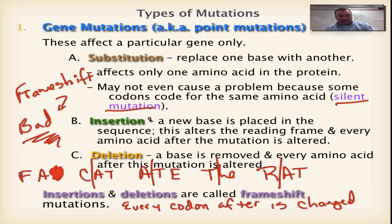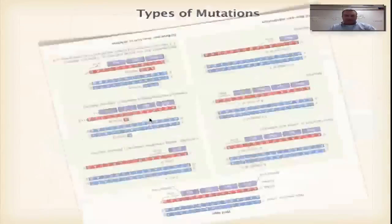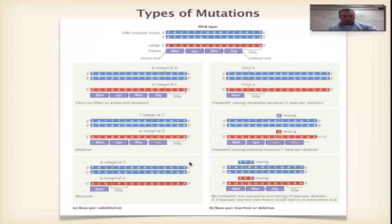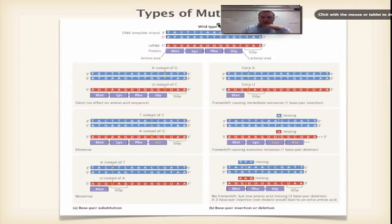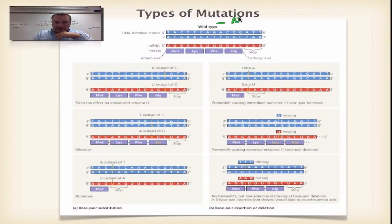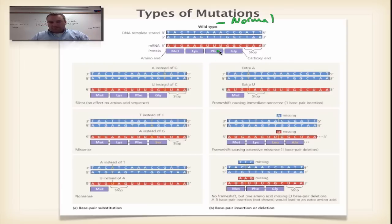We have a graphic up here that explains all these different mutation types. Wild type is a word that simply means normal. So this is our normal DNA, and this is the mRNA made from it through transcription. We translate it and get MET, LYS, PHE, and GLY — four amino acids in our protein in that order. That's perfect; everything's good.